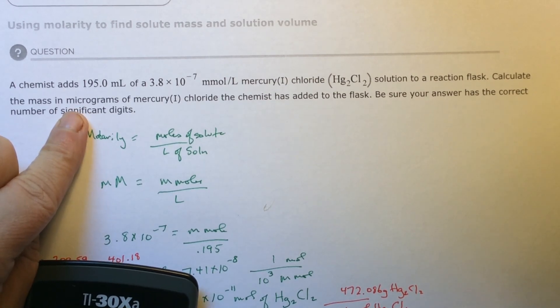In one gram of Hg2Cl2, how many micrograms are there? Micro means a million. So there are 1,000,000 micrograms in a gram.